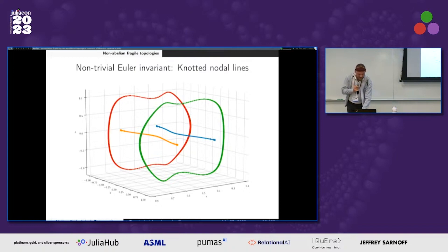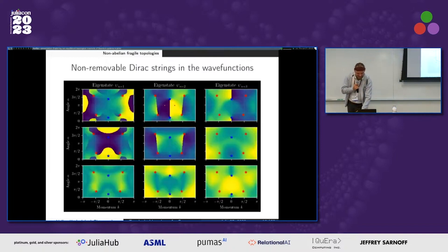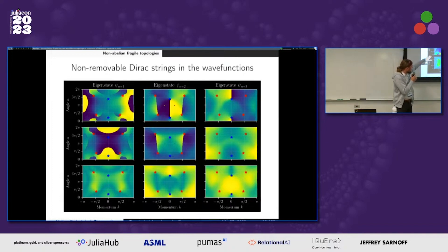This is exactly what we wanted to find. This is exactly where you have this Euler invariant. You can also see it in the wave function that there are these Dirac cones. The Dirac cones have Dirac strings in between. You can see them in the wave function. These are strings which you cannot remove.